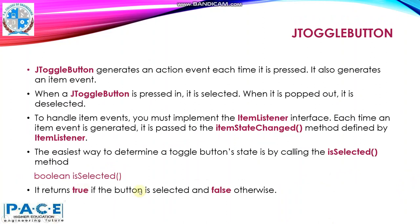JToggleButton generates an action event each time it is pressed. It also generates an item event. When a toggle button is pressed, it is selected. When it is released, it is deselected. To handle the item event, you must implement the ItemListener interface. Each time an item event is generated, it is passed to the itemStateChanged method defined by the ItemListener.